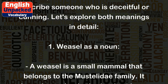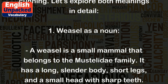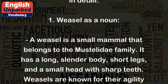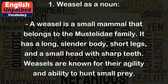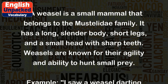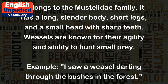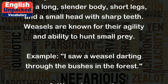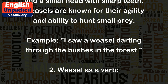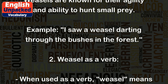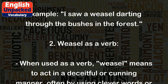1. Weasel as a noun. A weasel is a small mammal that belongs to the Mustelidae family. It has a long, slender body, short legs, and a small head with sharp teeth. Weasels are known for their agility and ability to hunt small prey. Example: I saw a weasel darting through the bushes in the forest.